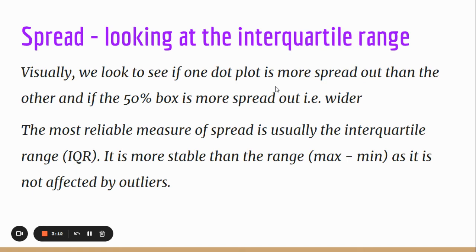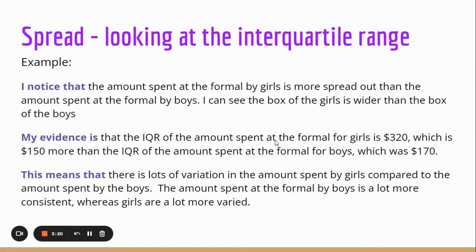We look to see which one has a more spread-out dot plot and also if the 50% box is more spread out or wider. 'I noticed that the amount spent at the formal by girls is more spread out than the amount spent by boys.' I can see the box for the girls is wider than the box for boys. That includes the range of the data from one end to the other.